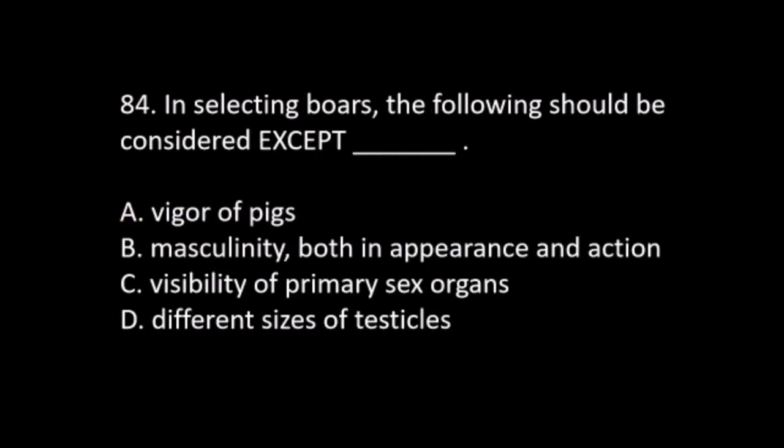Number 84. In selecting boars, the following should be considered except: A. Vigor of pigs. B. Masculinity, both in appearance and action. C. Visibility of primary sex organs. D. Different sizes of testicles. The answer is D. Different sizes of testicles.